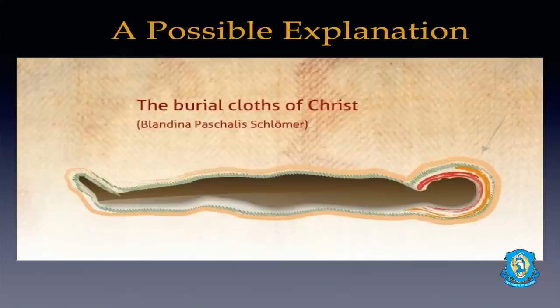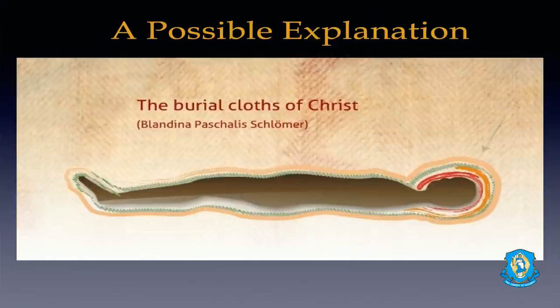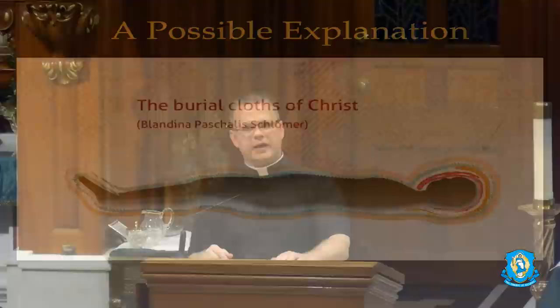Two are described in the passage we just read as linen, and the other was called a napkin, or in Latin, sudarium. A cloth has been venerated for centuries in Oviedo, Spain, where it is kept in a reliquary. This is called the Sudarium of Oviedo — a traditional cloth of Christ that was placed on his head, over his face, immediately after the crucifixion. While he was still on the cross, it is believed this cloth was placed over his head.